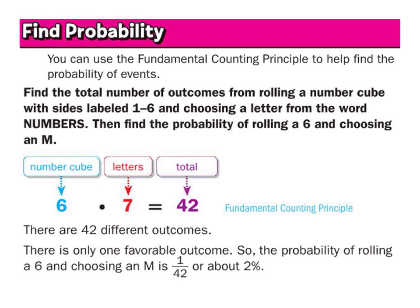So after we use the fundamental counting principle to figure out how many total outcomes there are, we can actually figure out a probability. All we've got to do after that is find out how many of the types of outcomes we want to happen, and then divide it by how many total outcomes there are.